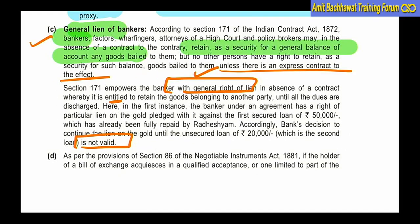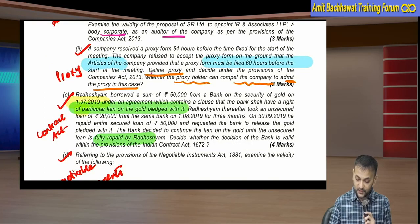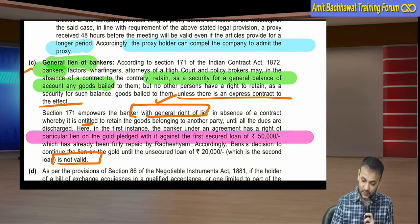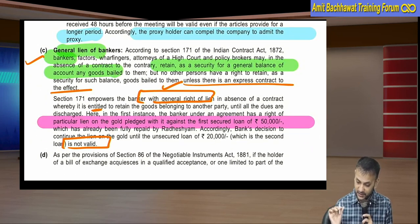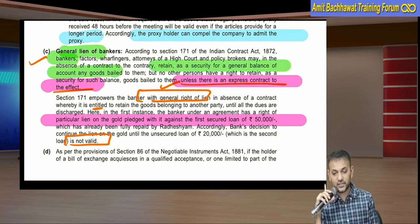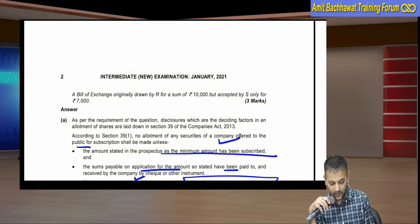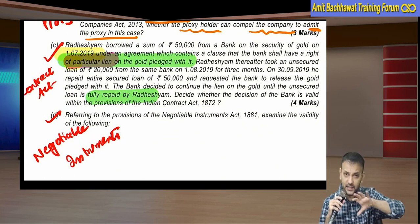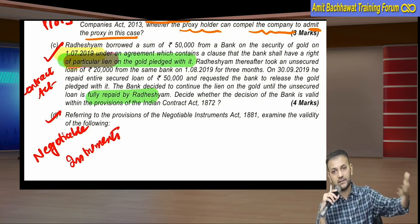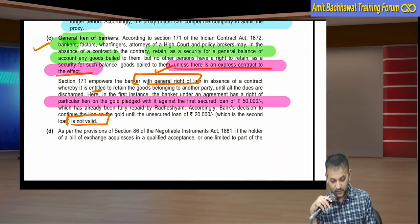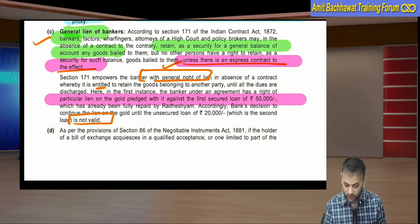The key point here: although bankers generally have a general lien, the question clearly states 'particular lien' as a specific word in the agreement. Bankers do have a general lien, unless there is an express contract to the effect. Since the question specifically mentioned 'particular lien' in the contract, the bank cannot extend the lien to the unsecured loan - making the bank's action invalid.